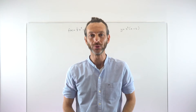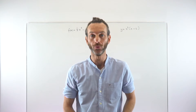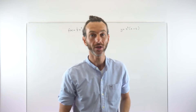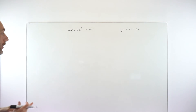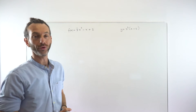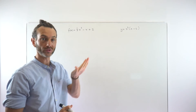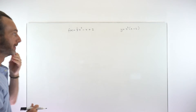In this video we're going to look at using the second derivative test to determine the nature of stationary points. A couple of things to unpack there. First of all, what is a stationary point? Essentially a stationary point is where the graph of a function changes direction — where the slope or gradient changes direction.